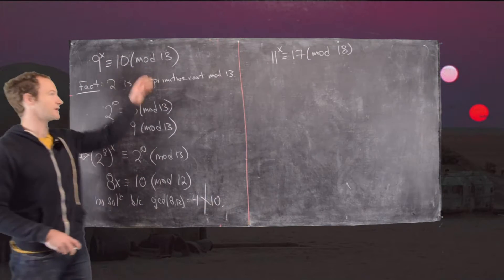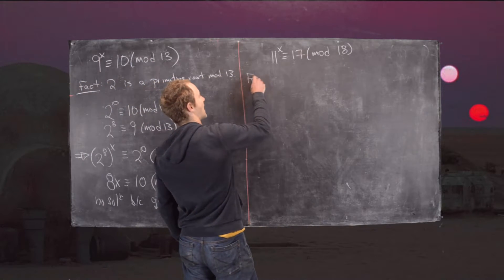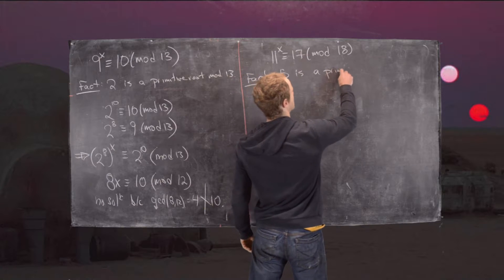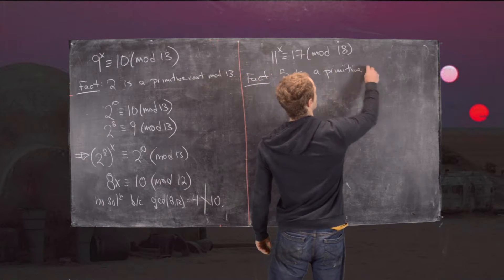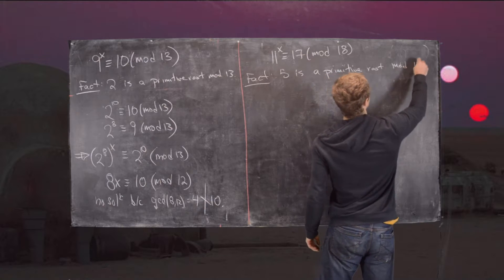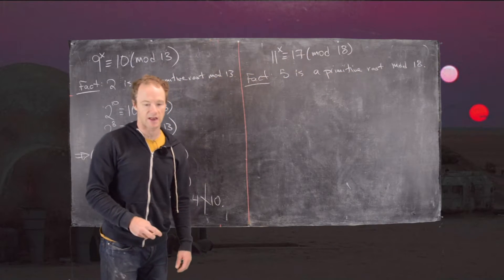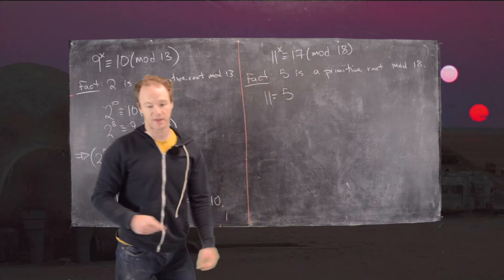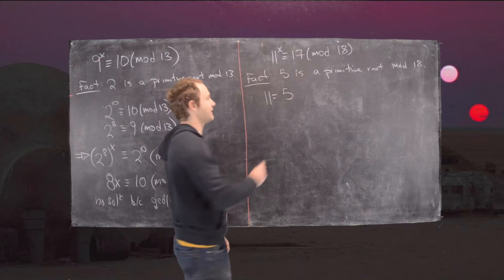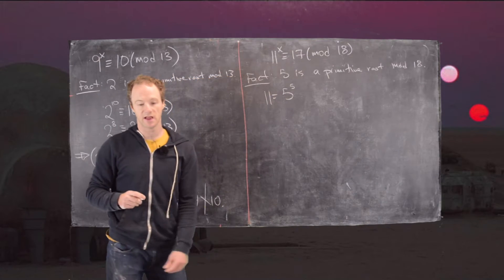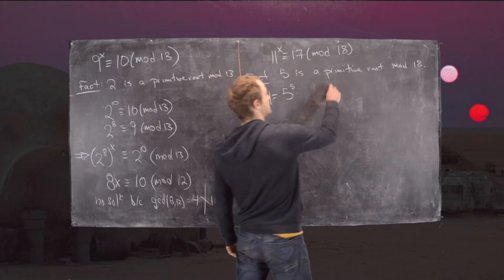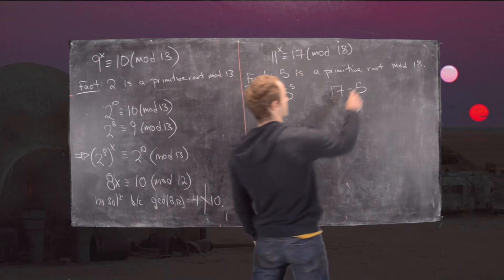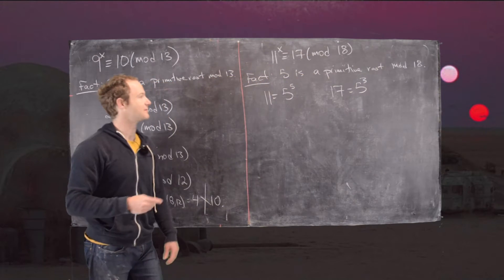Now we're going to move on to the next one. Again, we know there's a primitive root, and 5 is a primitive root mod 18. We can also notice that 11 is the same thing as 5 to the 5th power mod 18, and 17 is the same thing as 5 to the 3rd power mod 18.